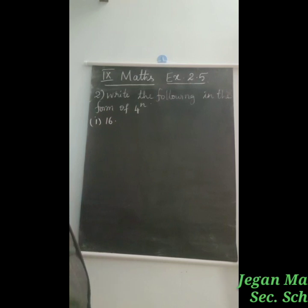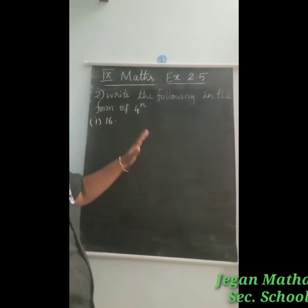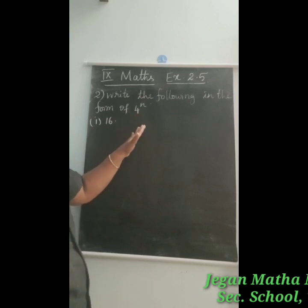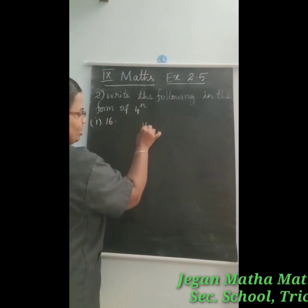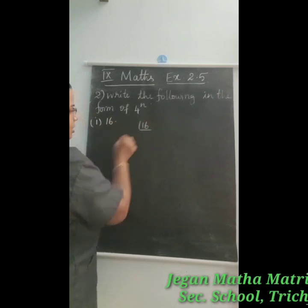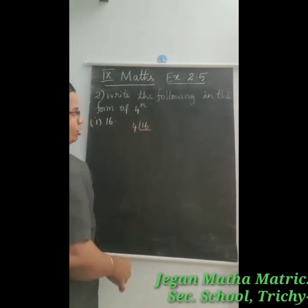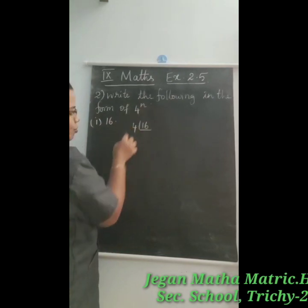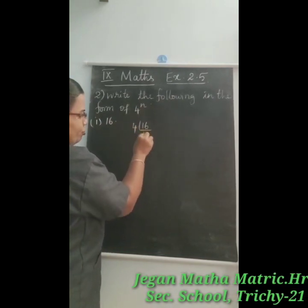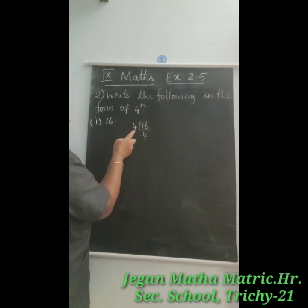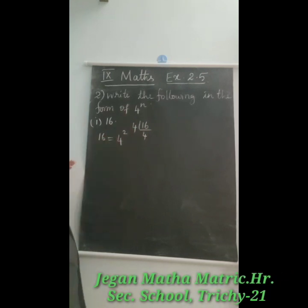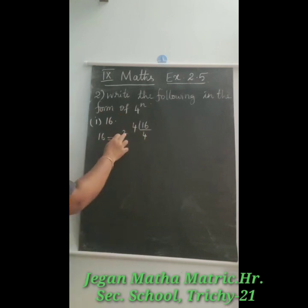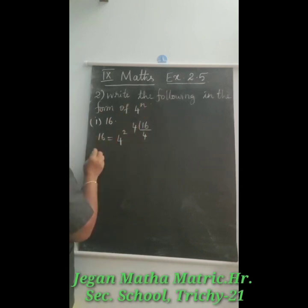The second question asks us to write the following in the form of 4 power n. The first value is 16. We divide by 4 because we need to express it as 4 power n. Since 4 × 4 equals 16, that is 2 times, so 16 is equal to 4 power 2, and n is equal to 2.